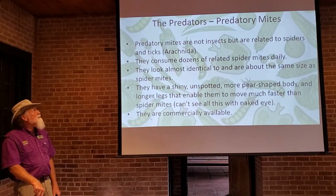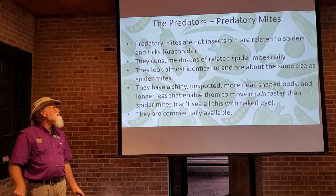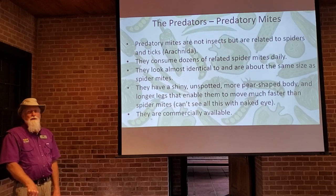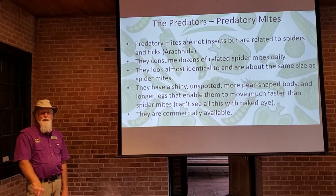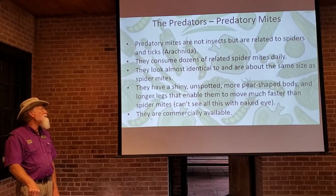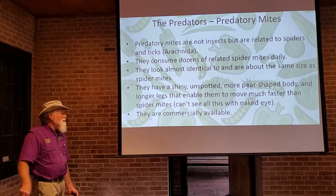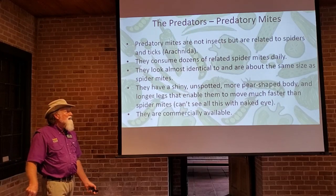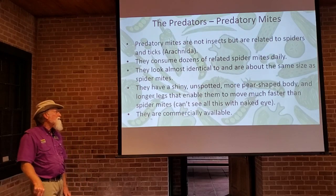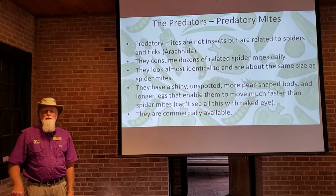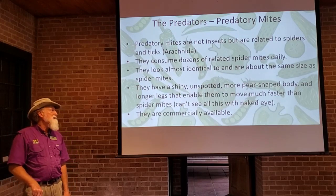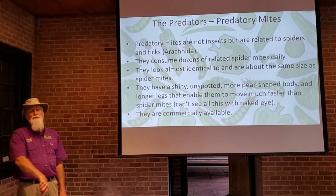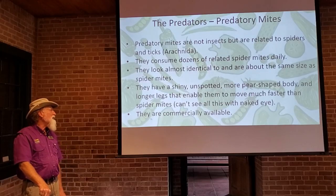The second group of predators are the predatory mites. They're not insects — they're related to spiders and ticks, in the arachnida group. One predatory mite will consume dozens of other mites during a normal day of feeding. Predatory mites look similar to other mites, but usually have a shiny, unspotted, more pear-shaped body and longer legs, so they can move faster and run down their spider mite prey. These differences must be observed with a hand lens.